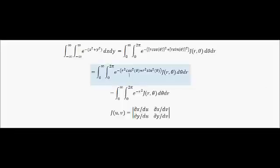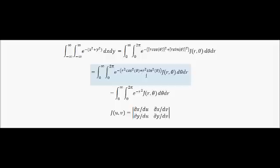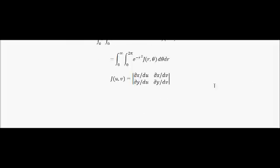Expanding out, we have r squared cos squared theta plus r squared sin squared theta. Factorising, and using the identity cos squared theta plus sin squared theta equals 1, we end up with a much nicer integral — we have e to the minus r squared, and this is looking a lot easier to evaluate.